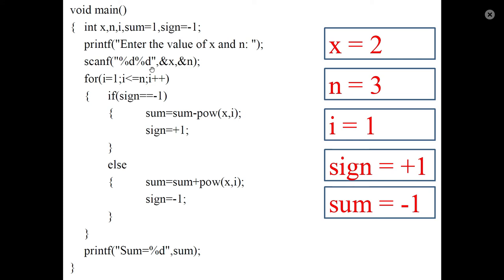Next iteration: i becomes 2, condition is true. Check sign — now it is plus 1, so go to the else part: sum equals sum plus x raised to i. X equals 2 and i equals 2, so 2 raised to 2 is 4, added to the sum. The sum becomes 3. Then update sign so next iteration will subtract.